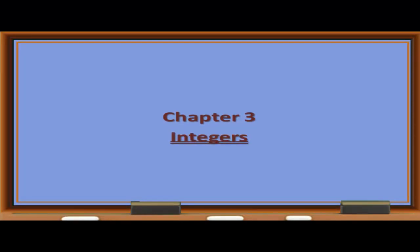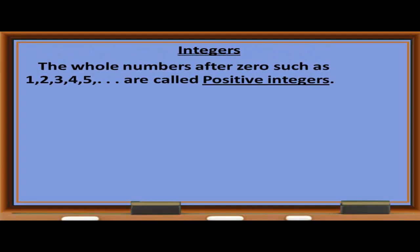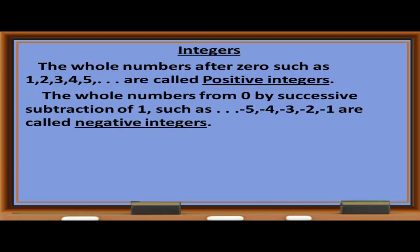Chapter 3: Integers. The whole numbers after 0, such as 1, 2, 3, 4, 5 and so on, are called positive integers. The whole numbers from 0 by successive subtraction of 1, such as negative 1, negative 2, negative 3, negative 4, negative 5 and so on, are called negative integers.